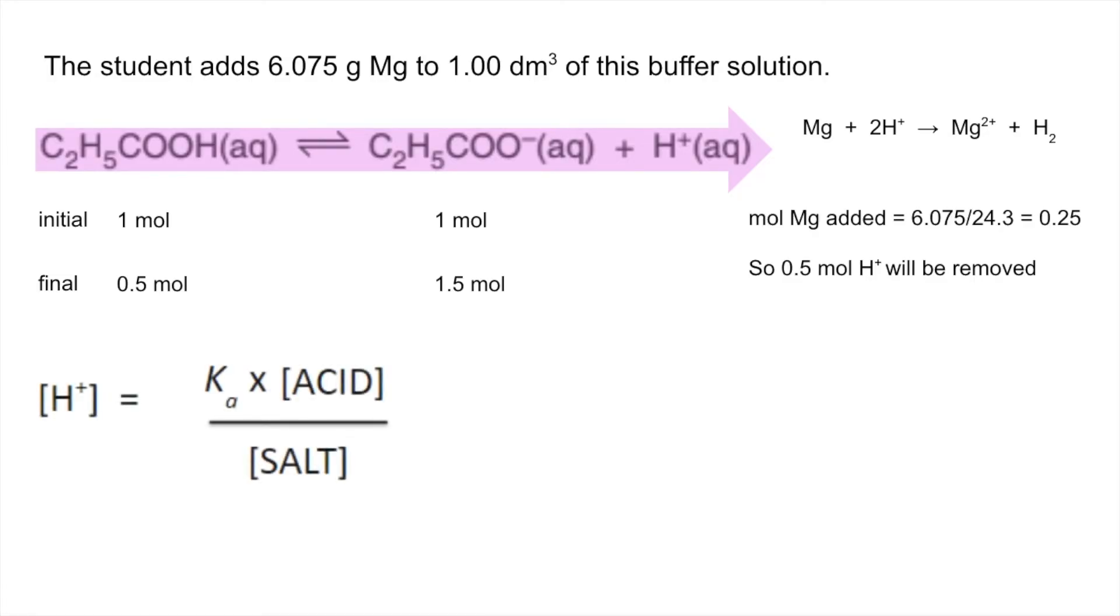Now we'll bring the cacid over salt expression into play. Remember that the square brackets represent concentrations. We've got moles at this point, but the buffer is 1 dm³, so the moles are the concentration. Therefore H+ concentration is Ka multiplied by the acid concentration over the salt concentration. That gives us 4.5 × 10⁻⁶ moles per dm³, so the pH is 5.35. That's quite a tricky one.